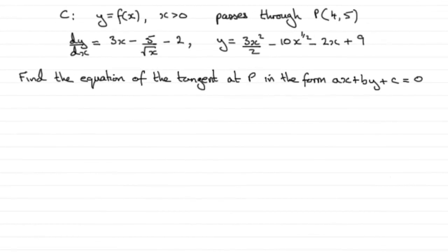Now for this last part of the question, I've updated this with the equation of the curve we found earlier. And we've got to find the equation of the tangent to the curve at the point P in the form AX plus BY plus C equals zero.